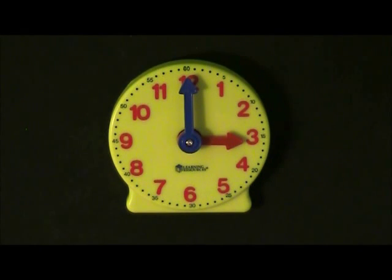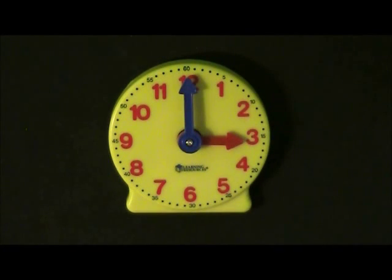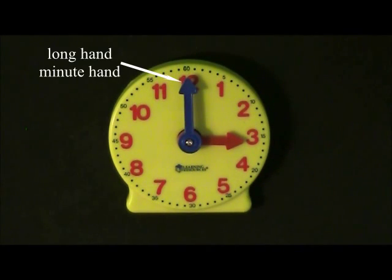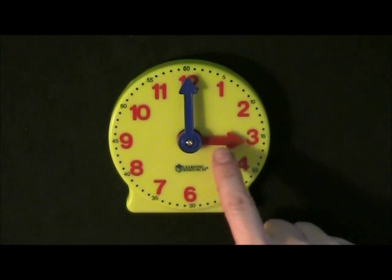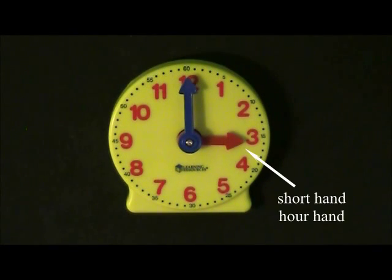A clock face also has two hands. The long hand, which is also called the minute hand, and the short hand, which is also called the hour hand.